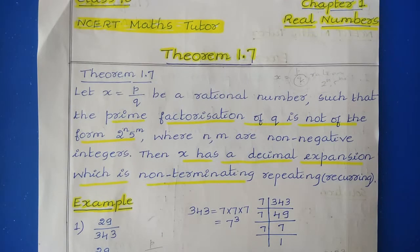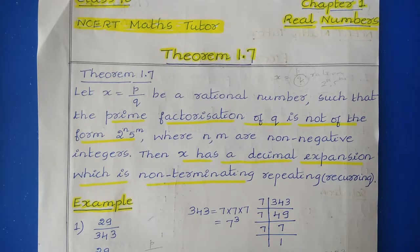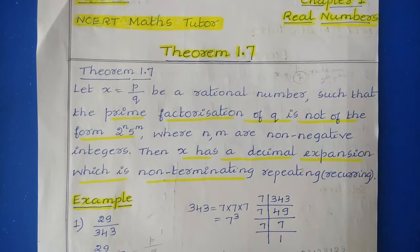Let x equal to p by q be a rational number such that the prime factorization of q is not of the form 2 to the power n into 5 to the power m, where n and m are non-negative integers. Then x has a decimal expansion which is non-terminating repeating.